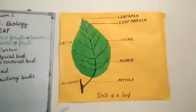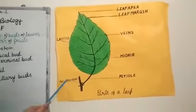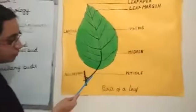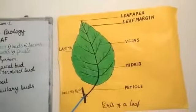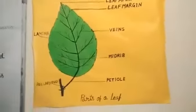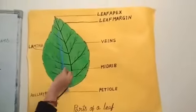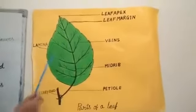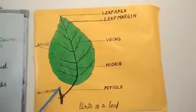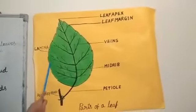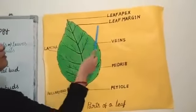Now petiole. The basal part of a leaf is a stalk; it is called petiole. It is attached to the stem at the node. Now lamina. The flat, green, broad part of the leaf is called lamina or leaf blade. The outer edge of the lamina is called leaf margin.